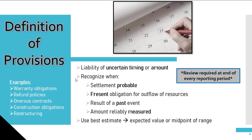To go over the provision criteria, you must meet three conditions. It must be a present obligation for the outflow of cash as a result of a past event. It must be probable that resources will be needed to settle the obligation. And the amount can be reliably measured. An obligation exists when the company has no alternative to settling it other than being enforced by law. Probable in the case of a provision means more likely than not, approximately 50% or higher probability.